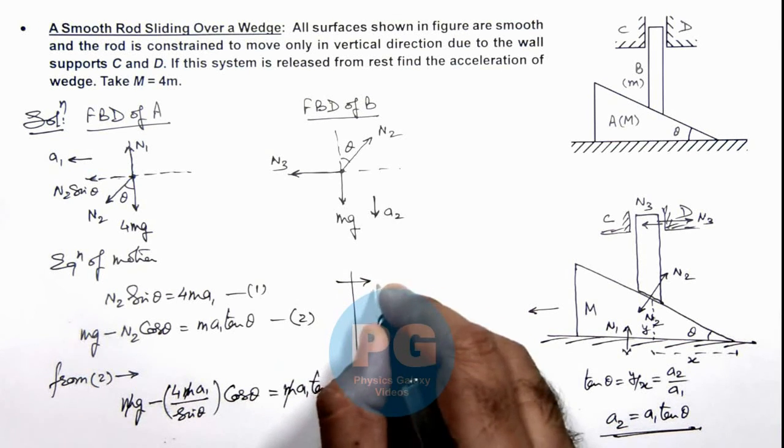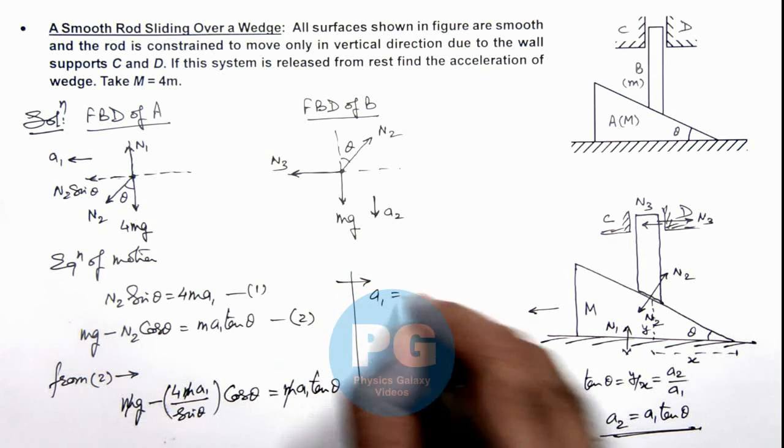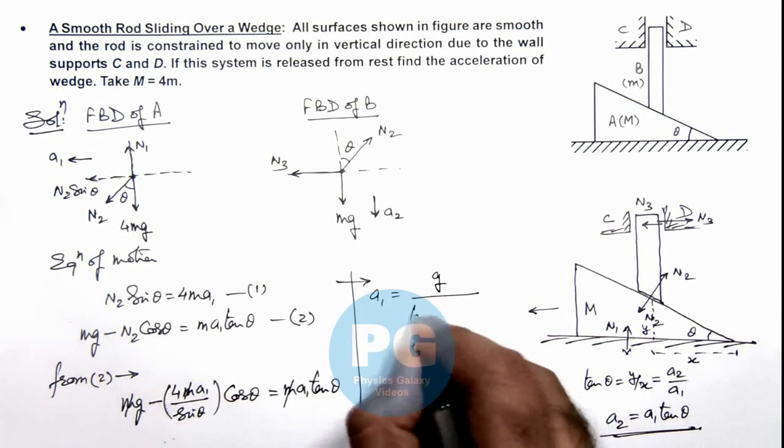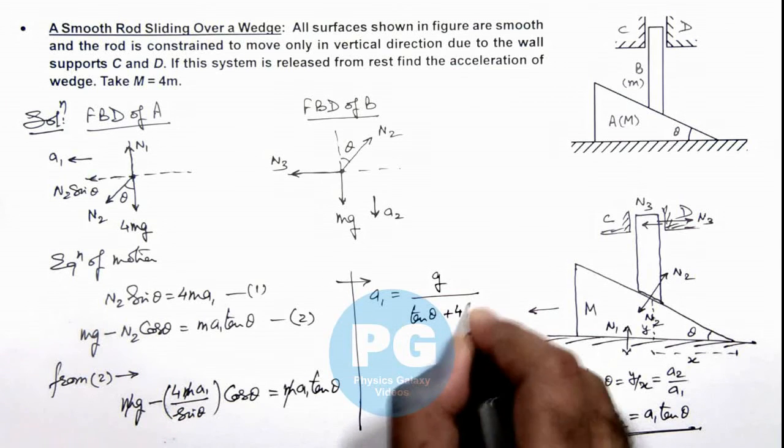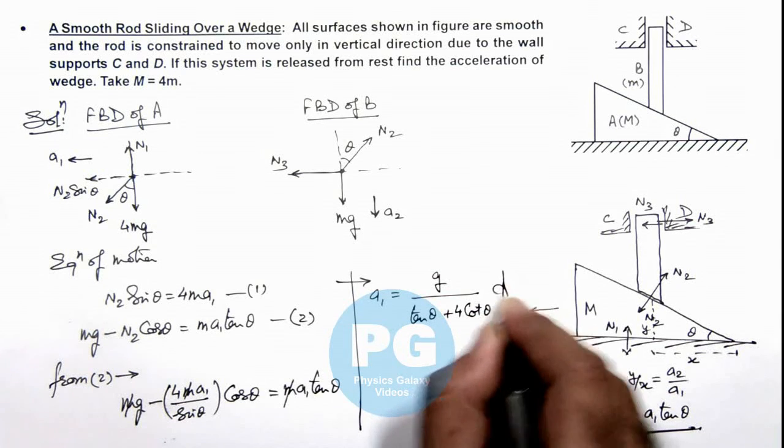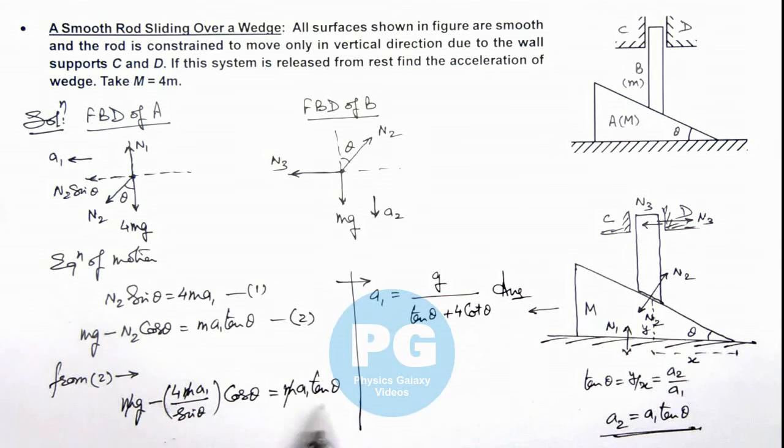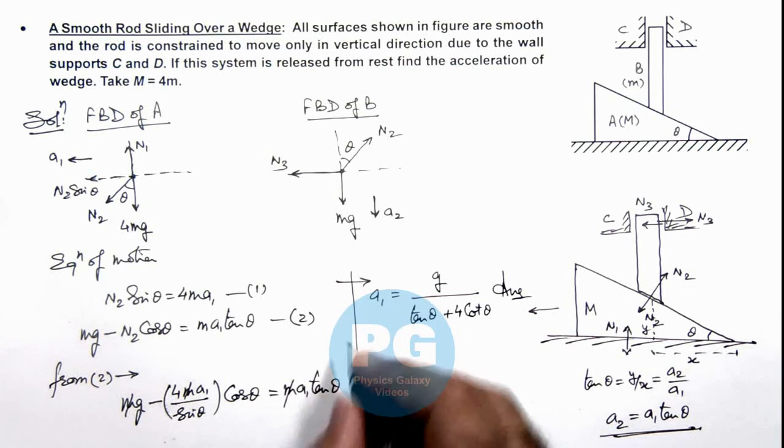The value of a1 here we are getting is g divided by tan theta plus 4 cot theta. That will be the final result for the problem. I leave it for you to simplify this equation and get the result.